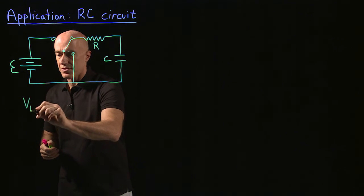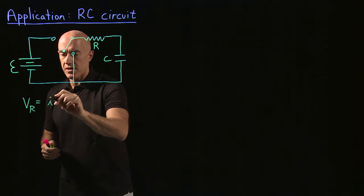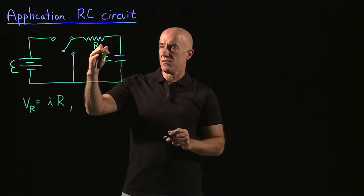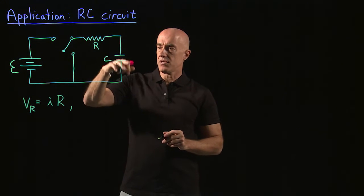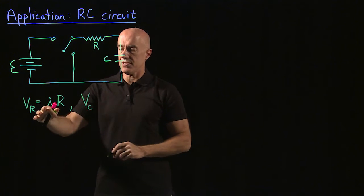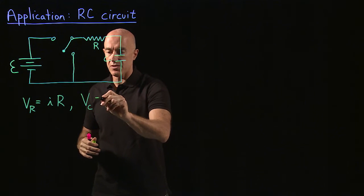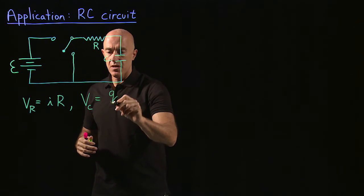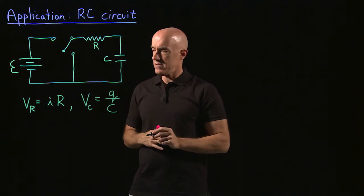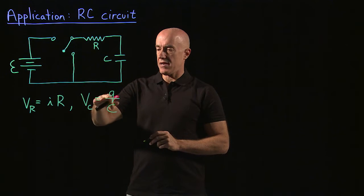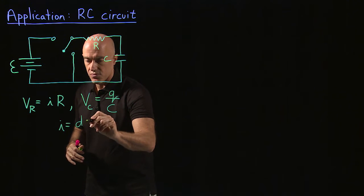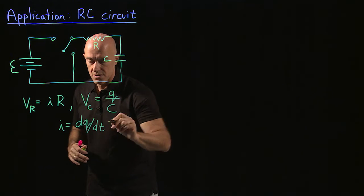The voltage across a resistor is equal to the current going through the resistor times the resistance — that defines the resistance R. The voltage drop across the capacitor is equal to the charge on the capacitor divided by the capacitance of the capacitor — that defines what C means. And the current and charge are related: the current is just the derivative of the charge with respect to time.